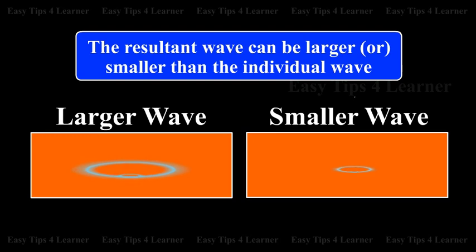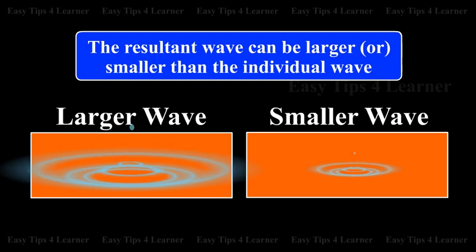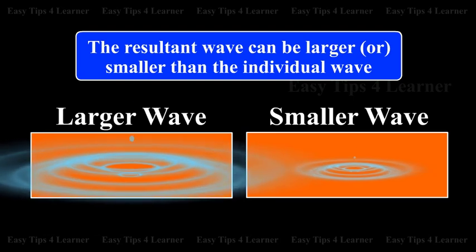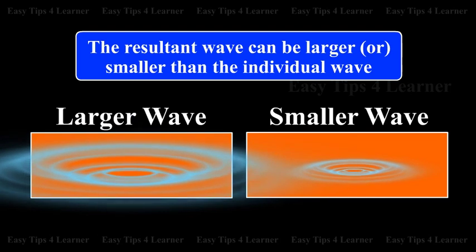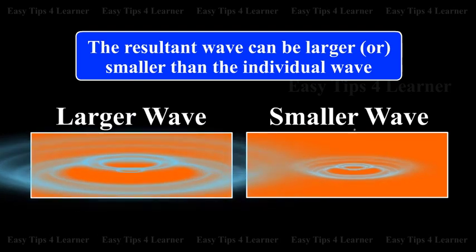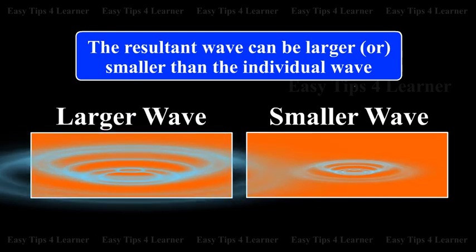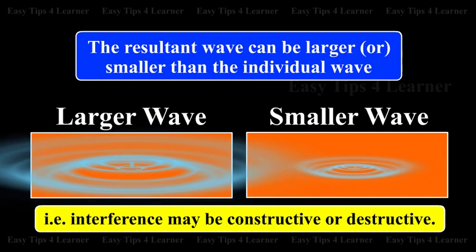Wave. When a number of waves are present in a given region of space, due to interference, the resultant wave can be larger or smaller than the individual waves. That is, interference may be constructive or destructive.